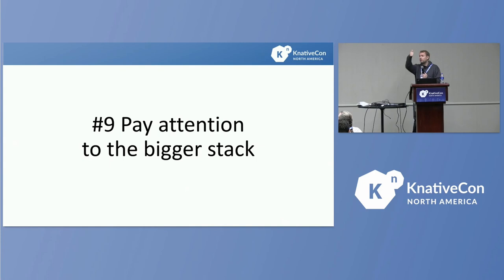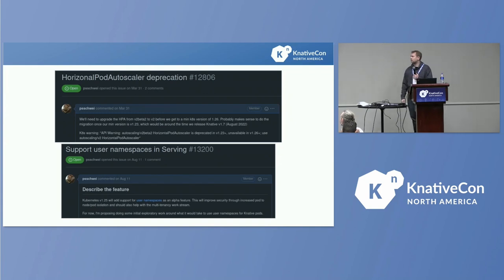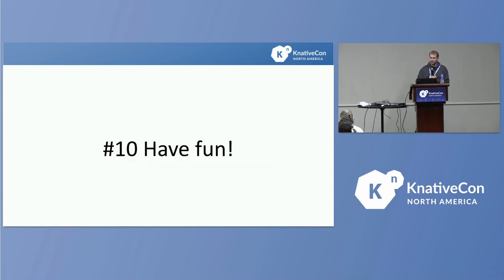Number nine: pay attention to the bigger stack. Knative runs on top of Kubernetes, which runs on top of a container runtime — this is a fast-moving space. Kubernetes releases every four months with new features and deprecations. For example, user namespaces just came out in Kubernetes 1.25, providing a more secure sandbox around containers — it would be great to open an issue about using that in Knative. Or horizontal pod autoscaler was supposed to be deprecated in 1.25. These are ways to show engagement without writing a ton of code.